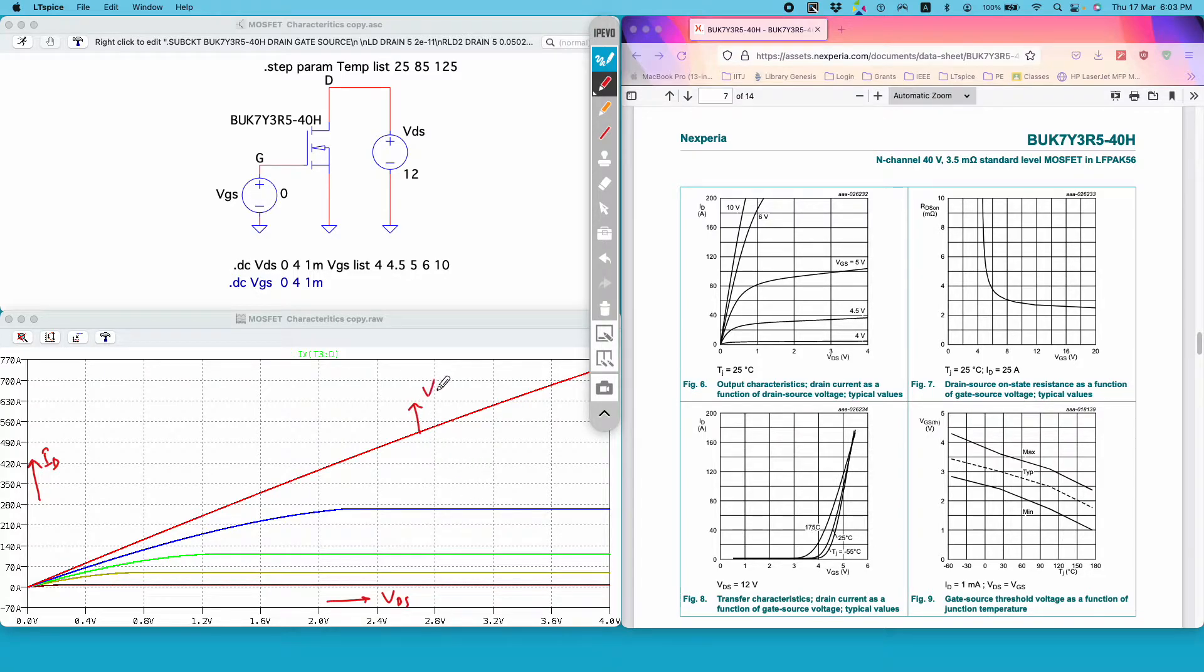So this is for VGS equal to 10 volts, this is for VGS equal to 6 volts, this is for 5 volts, this is for 4.5 volts and this is for 4 volts. So I guess you get an idea how you can plot the characteristics of the data sheet.